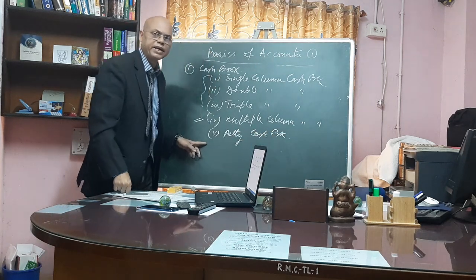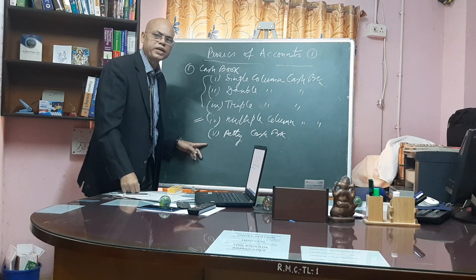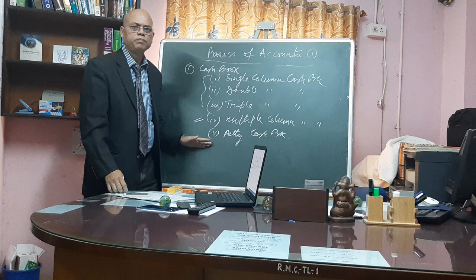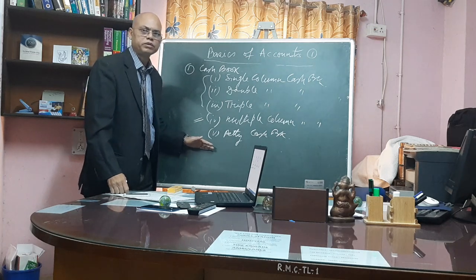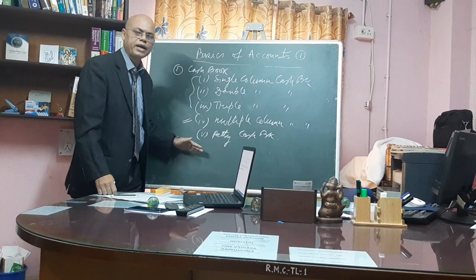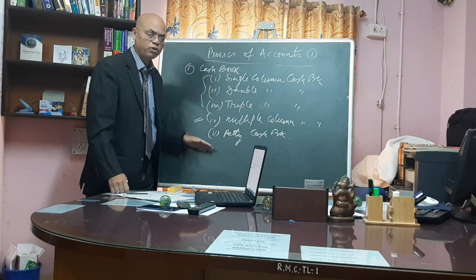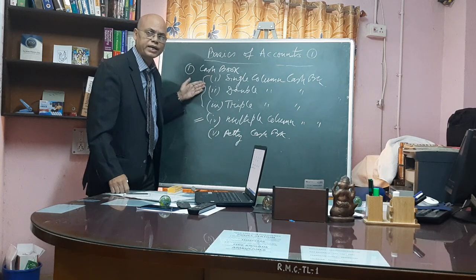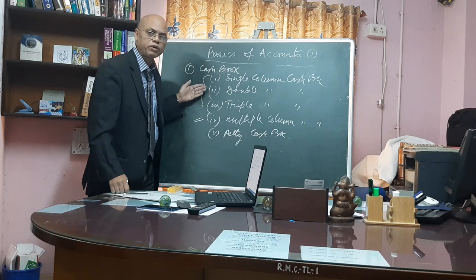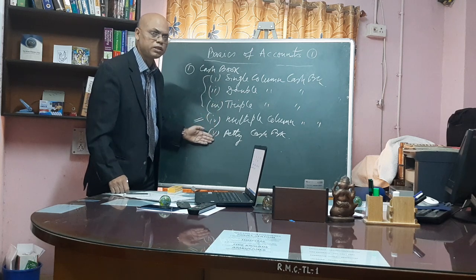The petty cashier keeps records of small amounts and uses a petty cash book. There is also an imprest system of petty cash, where the petty cashier keeps a particular amount as deposit money at the beginning of a period. We will discuss that in detail later. In summary, all cash transactions should be recorded in the cash book, without considering capital or revenue.